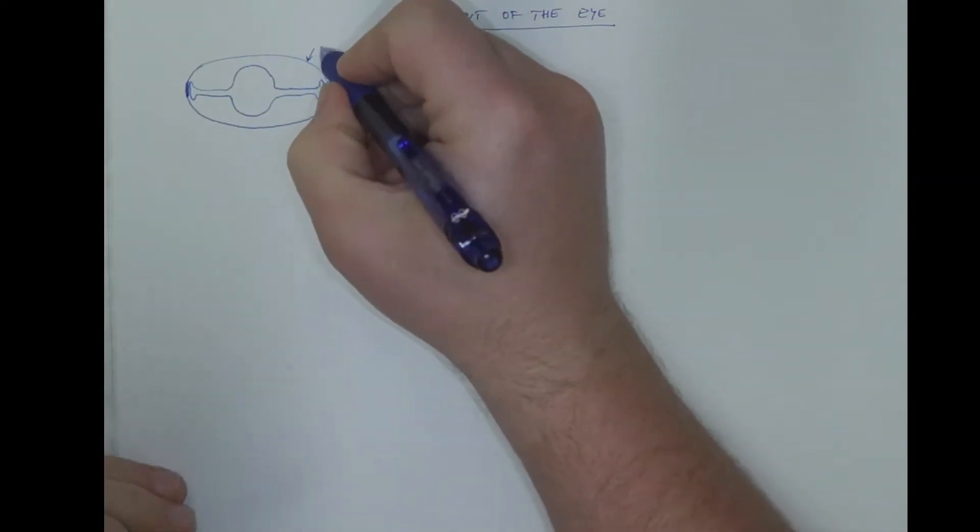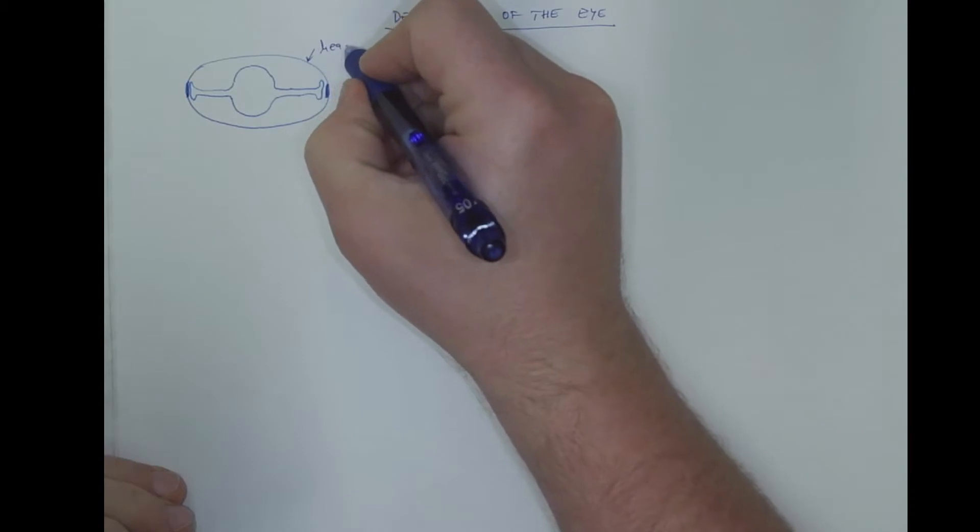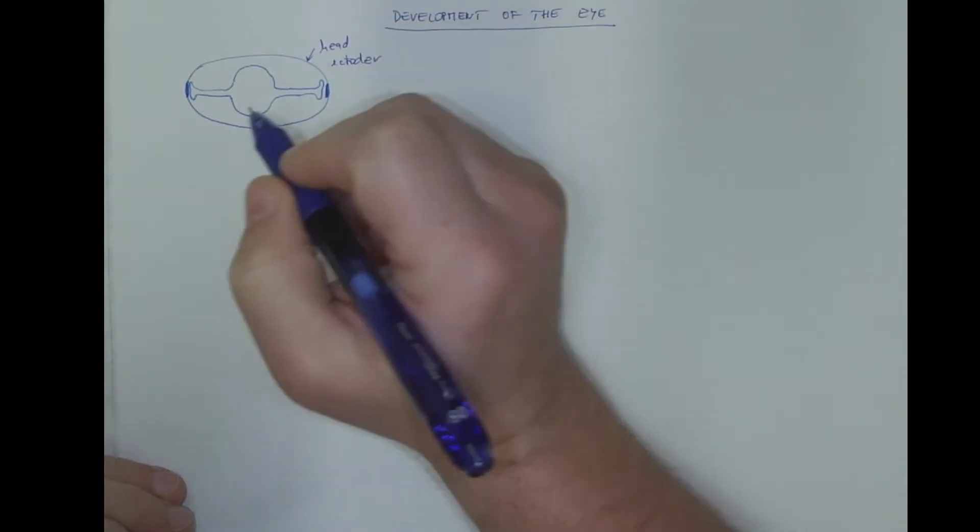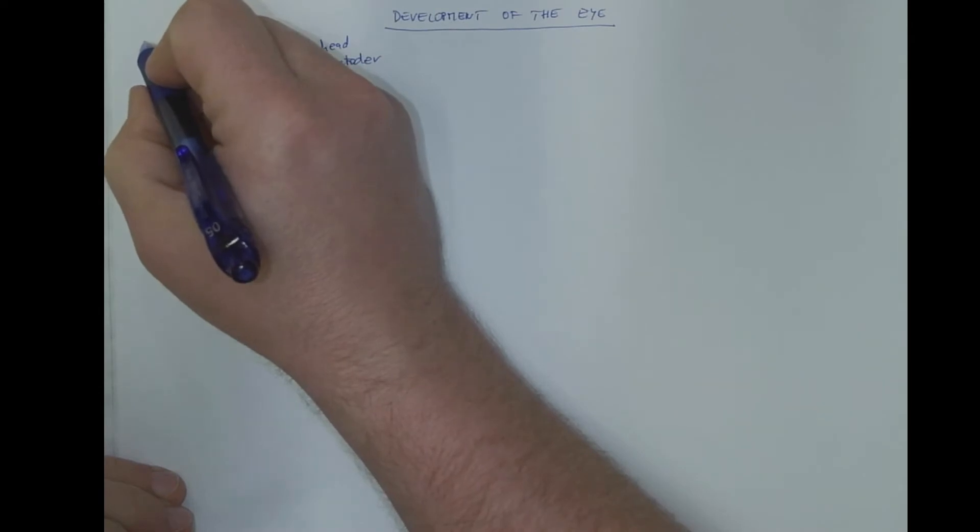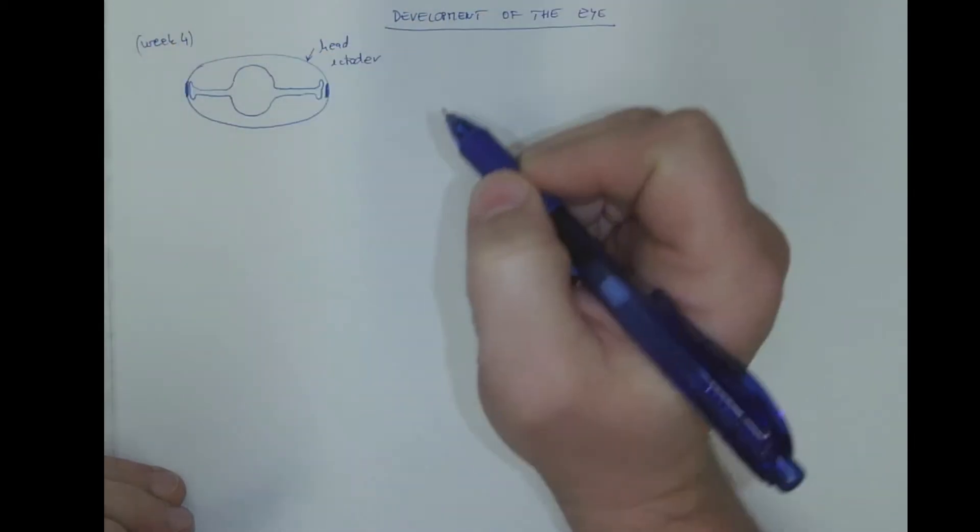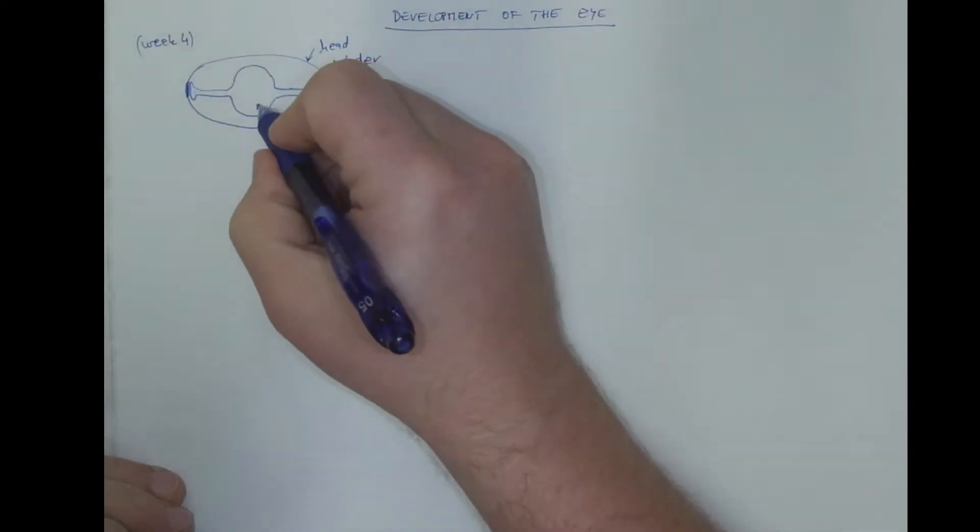So this is the head ectoderm. It's a section through the embryonic head in the fourth week. And this is the diencephalon...